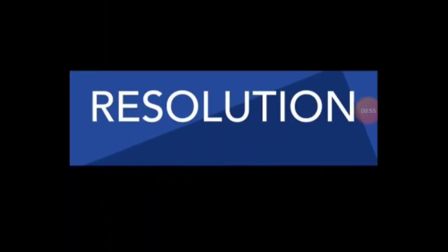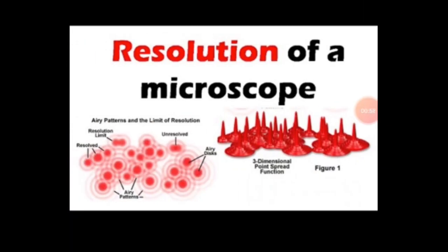Now we are going to discuss about resolution. The resolution of a microscope is defined as the smallest distance between two points on a specimen that can still be distinguished as two separate objects. It helps to measure the clarity of an object.